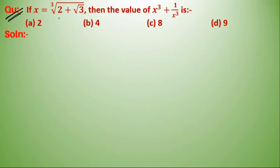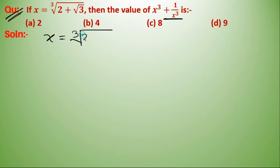Question: if x equals the cubed root of (2 plus root 3), then find the value of x cube plus 1 upon x cube. Given x equal to cubed root of (2 plus root 3), we cube both sides.